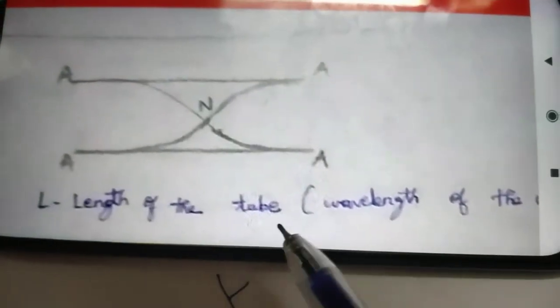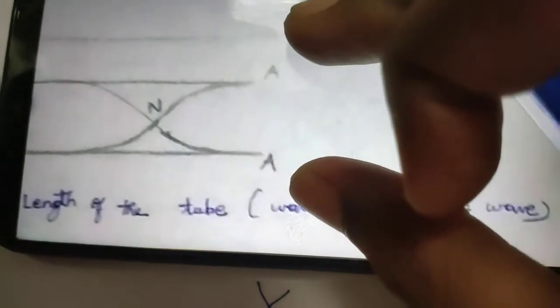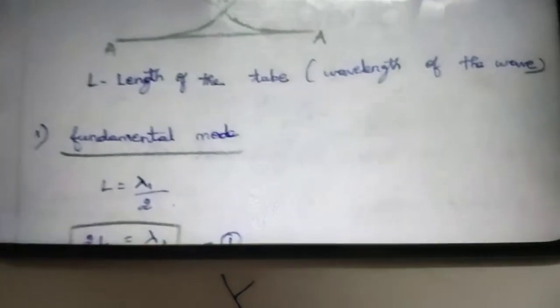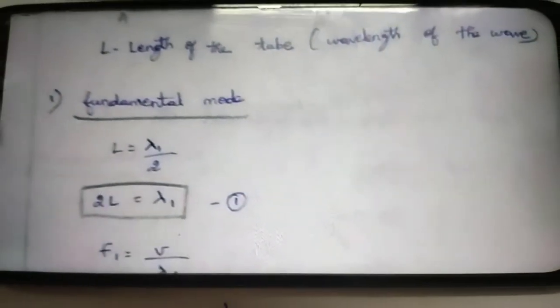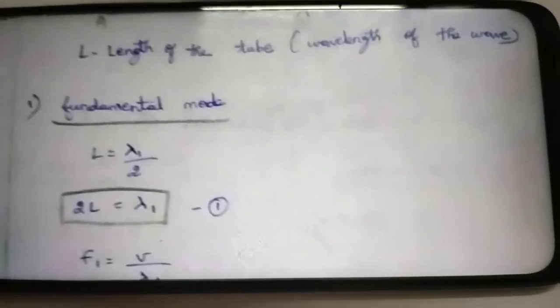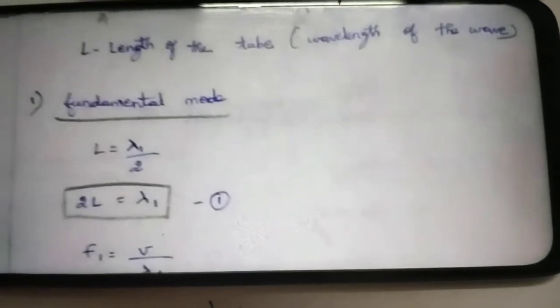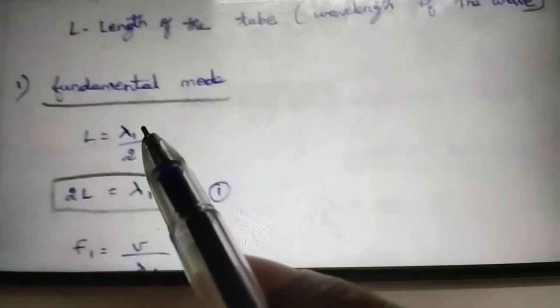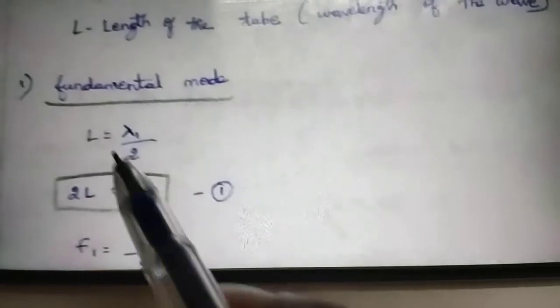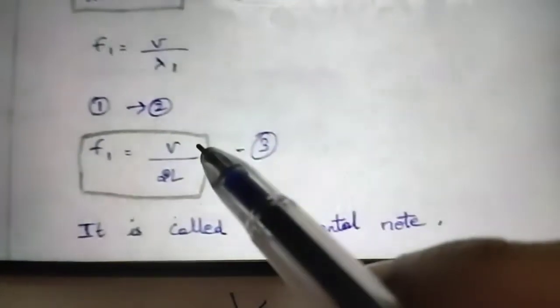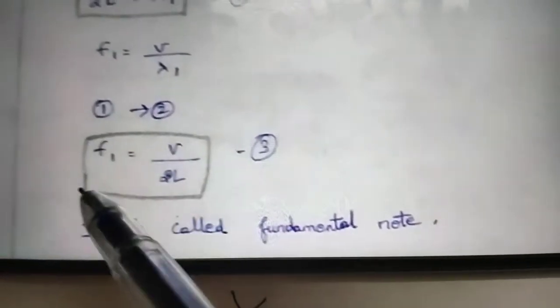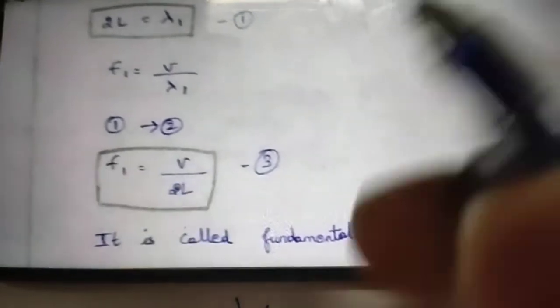The length of the tube and the wavelength of the tube are related. The wavelength lambda 1 divided by 2 gives the fundamental relationship. This is called the fundamental note, in which the fundamental frequency is defined. It is called the fundamental note, or the fundamental frequency.